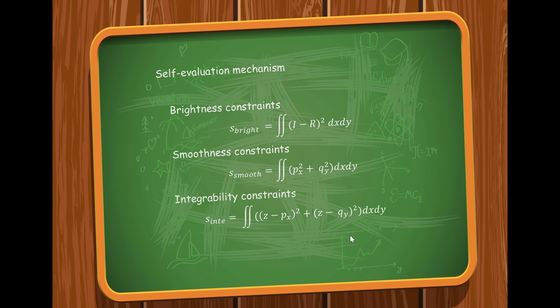Here is the self-evolution mechanism, which uses three constraint rules to check whether this three-dimensional reconstruction has a correct result. There are some restrictions on the generation of surface for three-dimensional image, which can be used to improve the correctness of the algorithm. Here we use brightness constraints, smoothness constraints, and also integrability constraints.